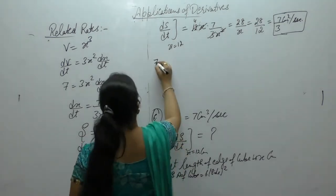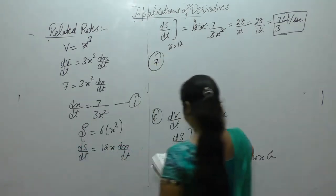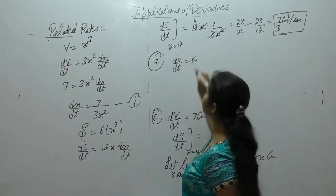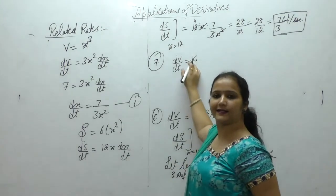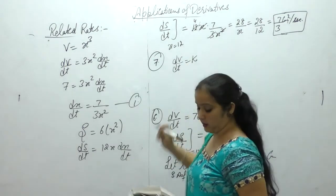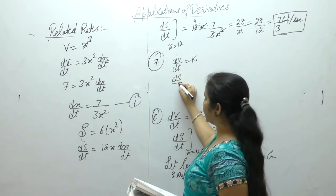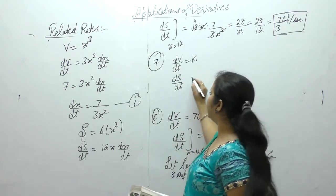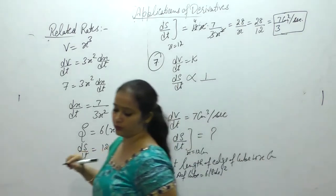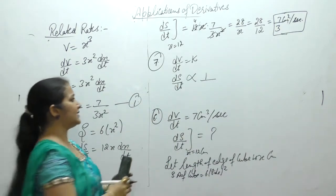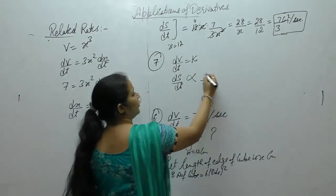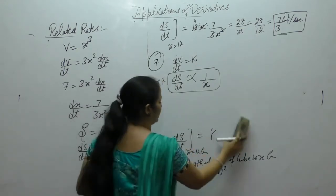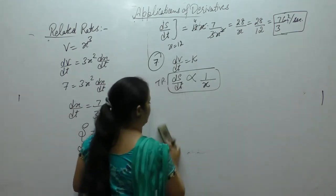Now next one: the volume of cube is increasing at constant rate. Let this constant be k. Prove the increase in surface area varies inversely as length of cube. Let length of cube be x. We want to show ds/dt is inversely proportional to length, i.e., ds/dt equals k divided by length.